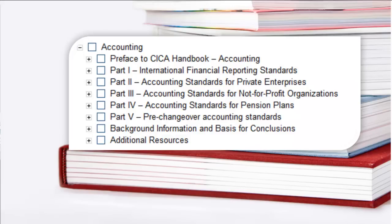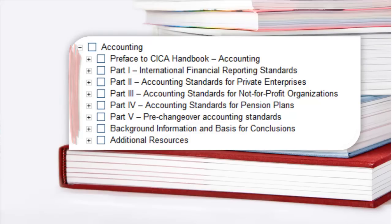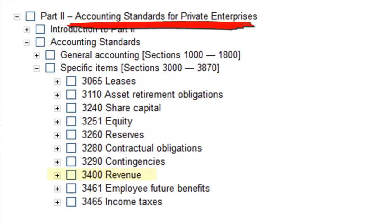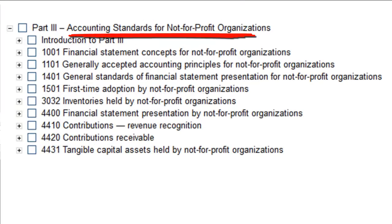First, you need to know your basis of accounting to determine which part of the handbook you are going to look in. You need to be intimately familiar with the handbook and its structure so that it becomes second nature. Under IFRS, the standards are embodied in IAS 18 Revenue and IAS 11 Construction Contracts. In ASPE, revenue is dealt with in Section 3400. For non-profit organizations, revenue is dealt with in Part 3 of the handbook, Section 4410.